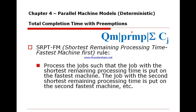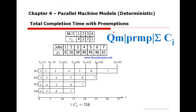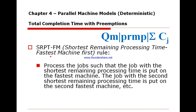One important reminder: the rule is shortest remaining processing time to be performed on the fastest machine — not the other way around. If we arrange the jobs by remaining processing time in increasing order and call P the remaining processing time, we know before sequencing that job one has 8 hours left, job two has 16, job three has 34, and so on.